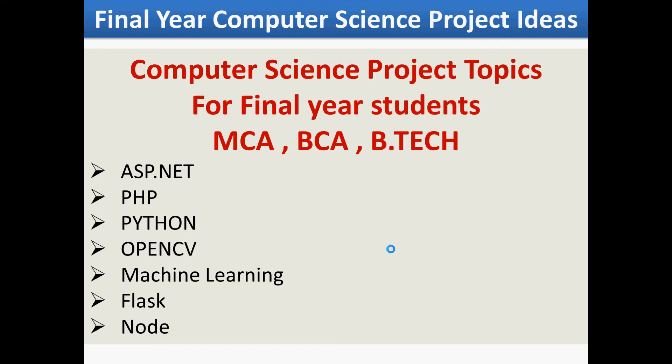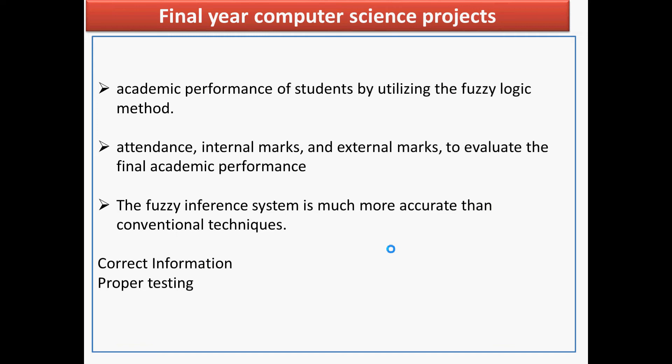Today's topic will be very similar to what you have been doing in your colleges, so it will be easier for you to explain the problem statement and how you can improve the current system. We are going to talk about academic performance of students. In every school and college, there should be a system through which we can monitor and check the performance of students.